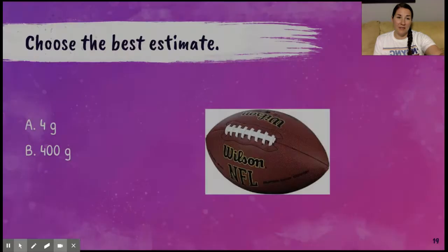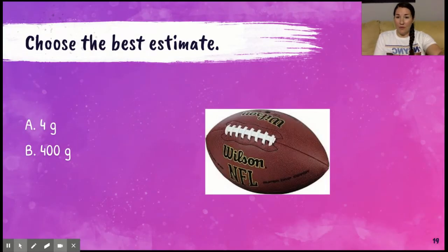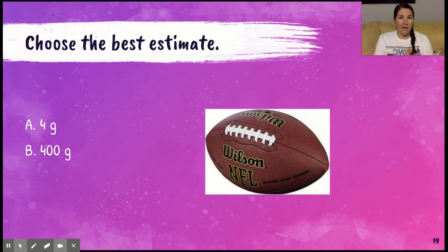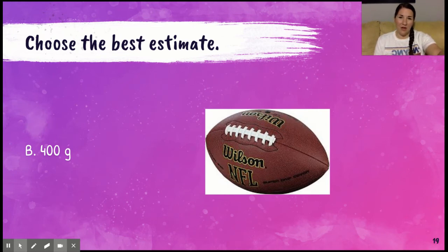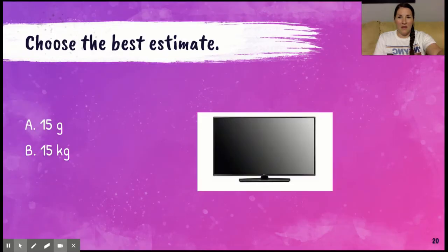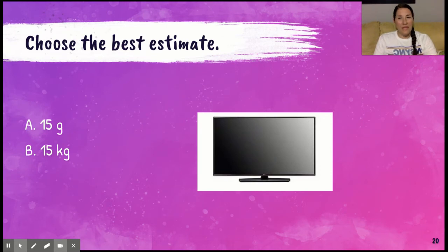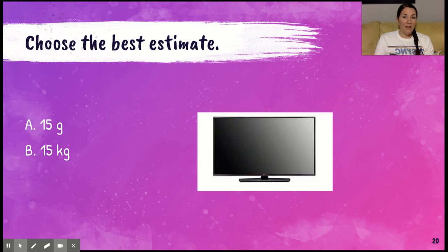Let's do a couple of practice problems looking at which unit would be better to measure mass. If I think about a football — four grams or 400 grams? One gram is the same as a paperclip, so a football probably weighs more than four paperclips. 400 grams sounds like a lot, but 400 paperclips really wouldn't weigh that much. So 400 grams makes more sense. Then think about a TV — 15 grams or 15 kilograms? 15 grams would be like 15 paperclips, which isn't much. 15 kilograms would be like 15 pineapples, which would be kind of heavy — just like what a TV would be. So a TV would be 15 kilograms.